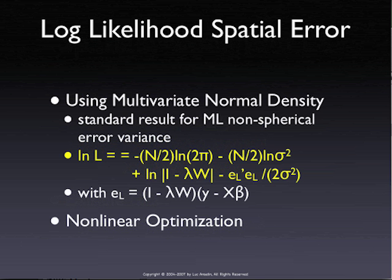For a spatial moving average, the problem is primarily computational. To maximize the likelihood, you need to iterate — try a value of the parameters, improve the likelihood, and keep recomputing. In the moving average model, the covariance matrix has an inverse term in it, so at each iteration you have to compute an inverse of an N-by-N matrix, which is computationally tough. As far as I know, there is no simplification of that process.